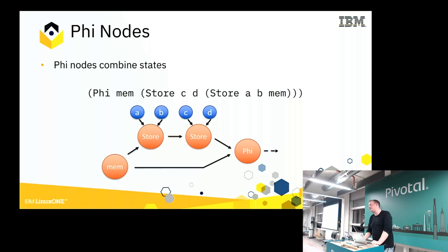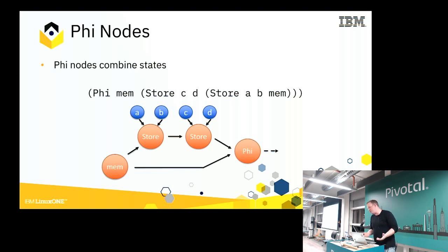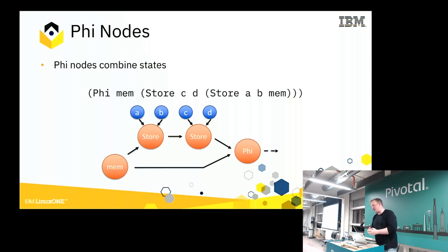One other thing is control flow in these types of graphs, and the way this is done is using phi nodes. A phi node essentially combines different possible states — for example, an if statement where in one branch it does two stores and in the other it doesn't do anything. One path goes through the top and does two stores and ends up at this phi, or we might just go straight to that phi. It's a way of representing that this value could be one of two possible things.